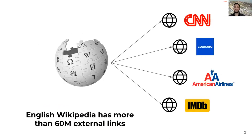First of all, we have to consider that Wikipedia, beyond being an encyclopedia, is a website with links to external web resources. Reading an article and navigating to an external website is part of the regular experience of Wikipedia users. Consider, for example, that only in the English edition, there are more than 60 million external links.